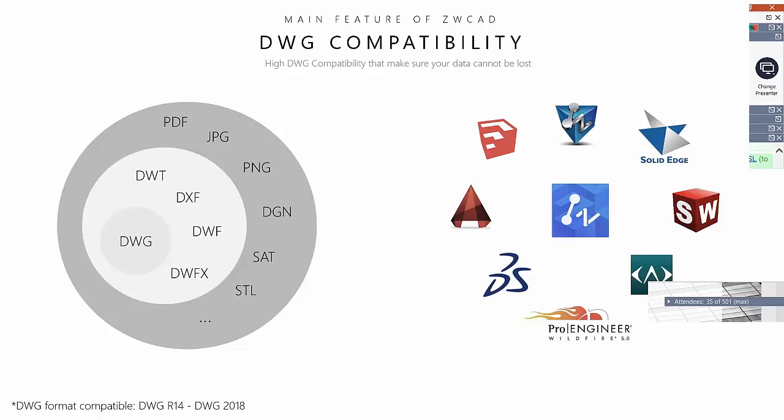The most important format in CAD software is DWG. I am very confident to say that any DWG drawings designed by other CAD software can be perfectly read and loaded in ZWCAD 2020 without any data loss. Besides DWG, we also support DWT template format, DXF, DWF, and other formats. We can also export to PDF, JPG, and PNG, and import files as references.